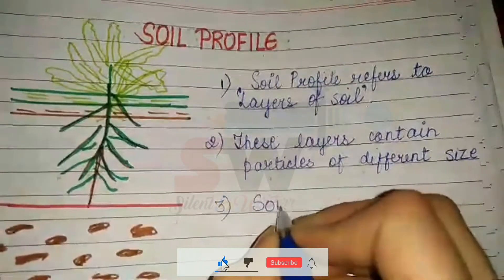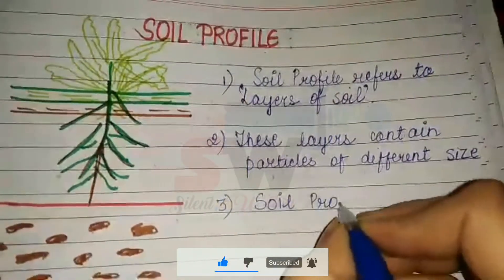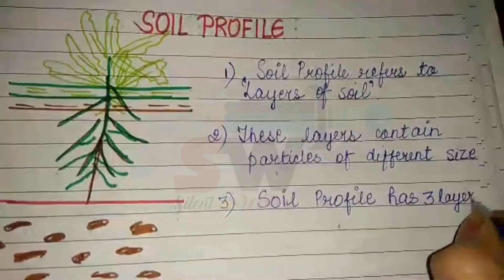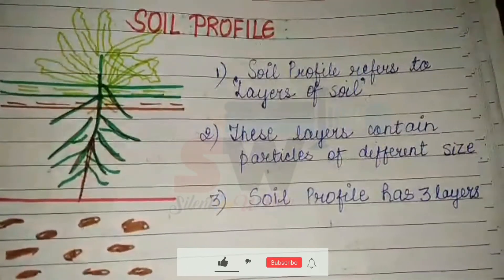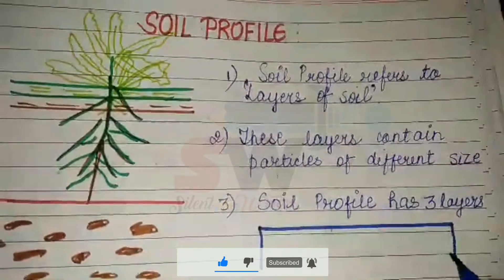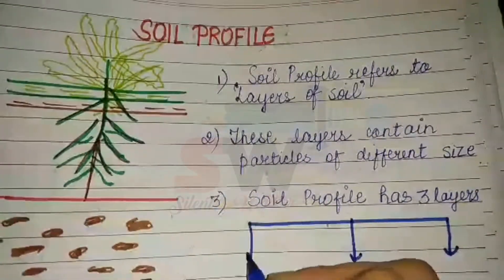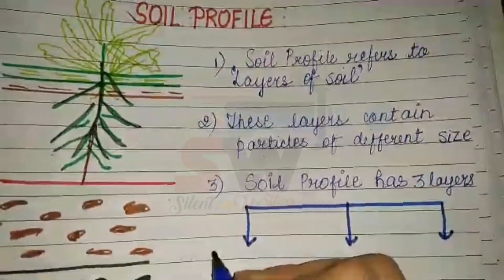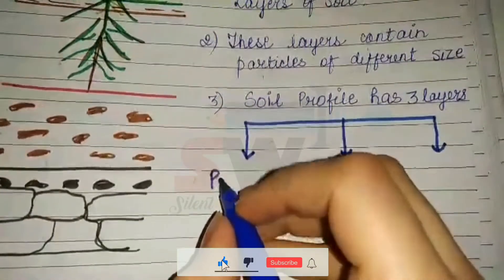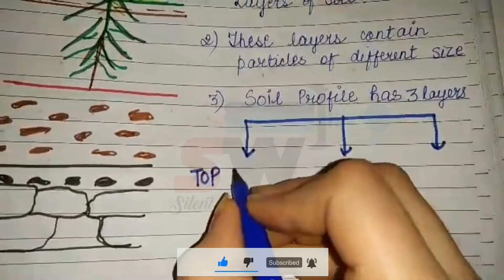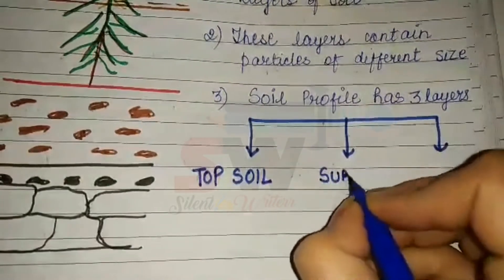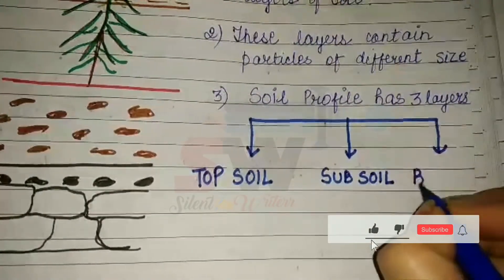A soil profile has three layers. The first is your topsoil, the second is your subsoil, and the third is your bedrock.